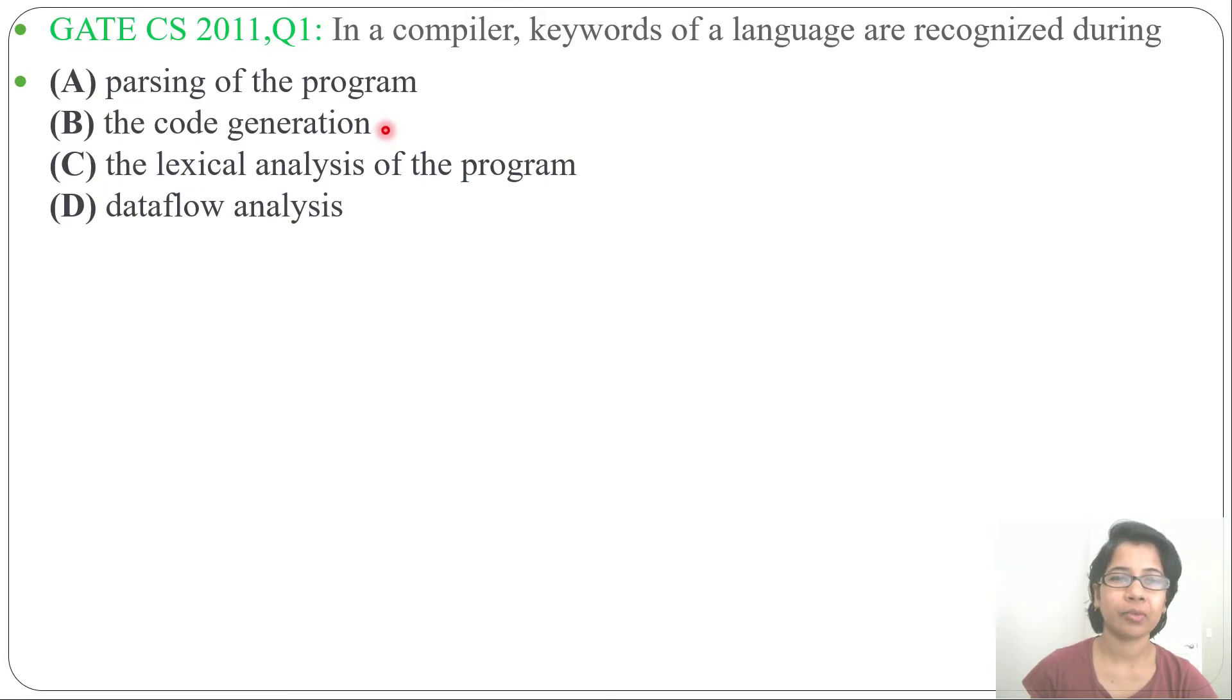Option C is the lexical analysis of the program. Lexical analysis converts a sequence of characters into tokens. It is also called a scanner or tokenizer. During this scan, it will recognize the keywords and convert keywords into tokens.